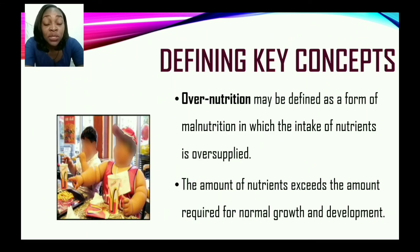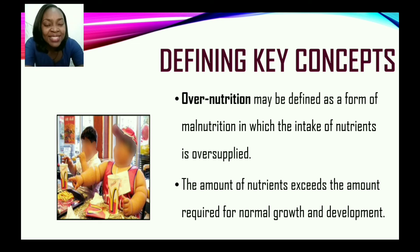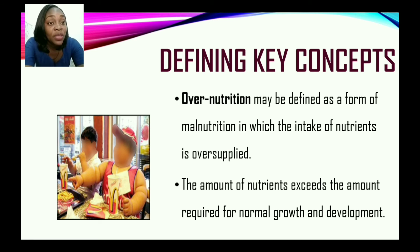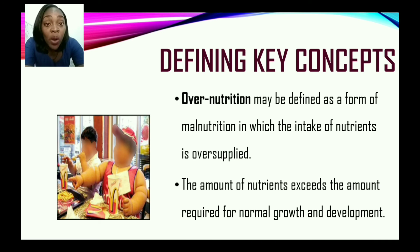Another form of malnutrition is overnutrition, which may be defined as a form of malnutrition in which the intake of nutrients is oversupplied — the amount of nutrients exceeds the amount required for normal growth and development. Therefore, persons who are overnourished are obese because they're taking in more than their bodies require, and it is stored as fat.